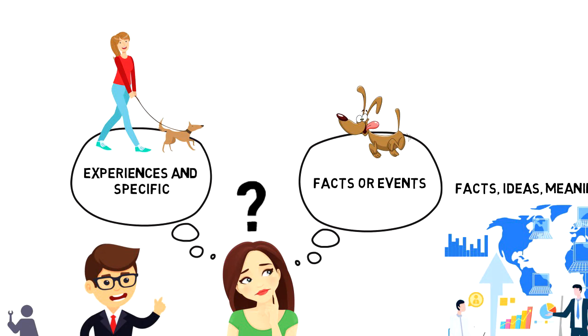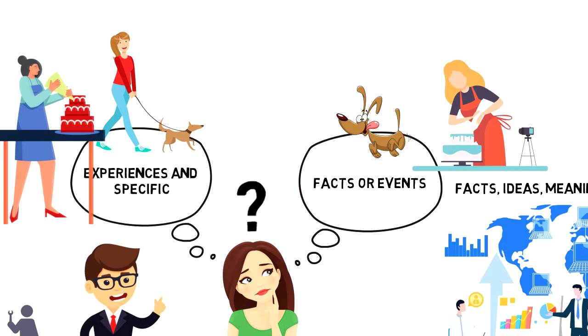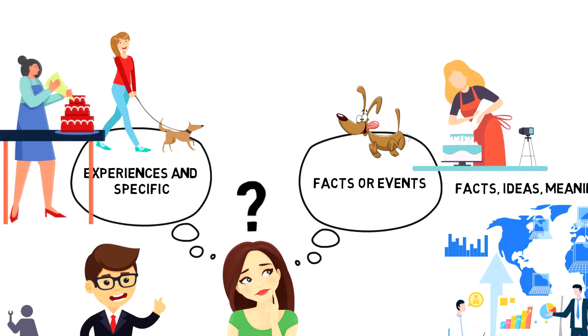Or let's say that you have a semantic memory that contains information about how to bake a cake. But if you remember how you were baking a cake last weekend, then that will be an episodic memory.